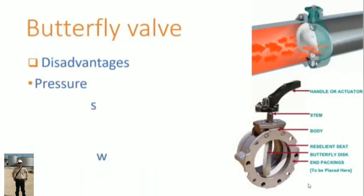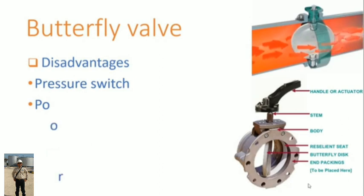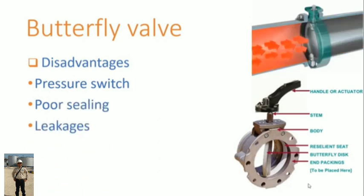Disadvantages: Butterfly valve always leads to a pressure switch because the disc always exists in the flow path. And the valve does not provide a good seal to the flow; therefore, leakages may occur.